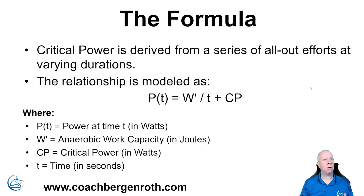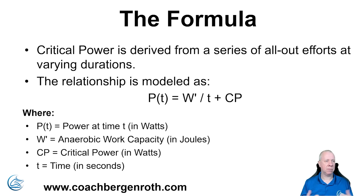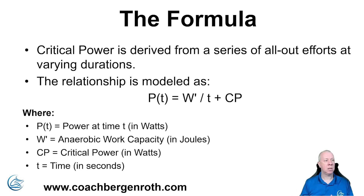Critical power is calculated from a series of all-out efforts of various fixed durations. The relationship between power and critical power is given by the formula: Power equals W prime — your anaerobic work capacity — divided by time, plus critical power. This is the formula that relates all the parts of the model together.